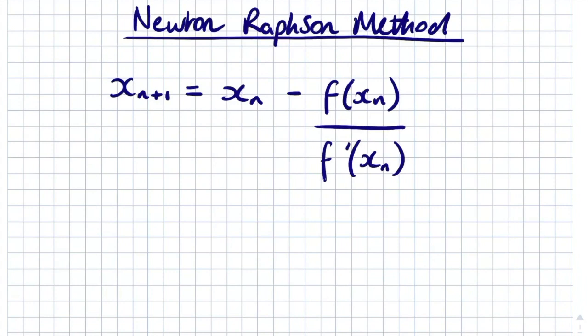Hi guys, welcome to this easy maths video. Today I want to make a video on the Newton-Raphson method. This is the Newton-Raphson formula: x_{n+1} is equal to x_n minus f(x_n) divided by the derivative f'(x_n). This is a formula that Newton came up with to try and find the solutions of any equation.